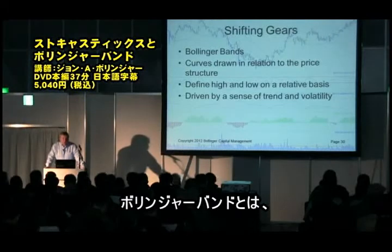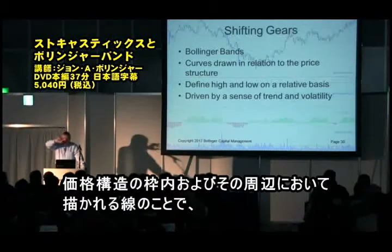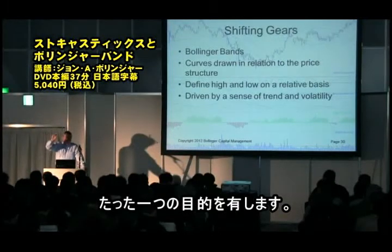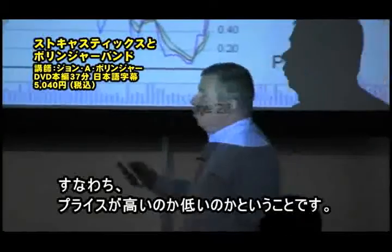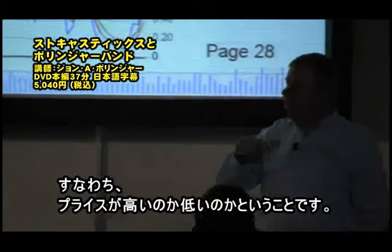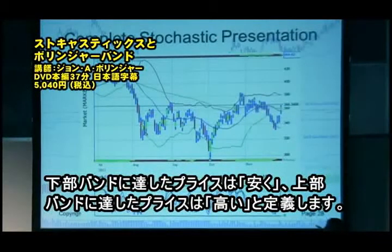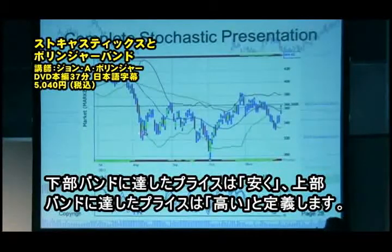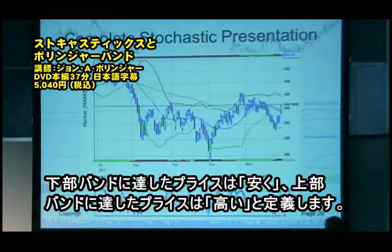Bollinger Bands are lines that are drawn in and around the price structure, and they have one purpose — to answer a question. That question is whether prices are high or low. By definition, prices are low when prices are at the lower band, and prices are high when price is at the upper band.